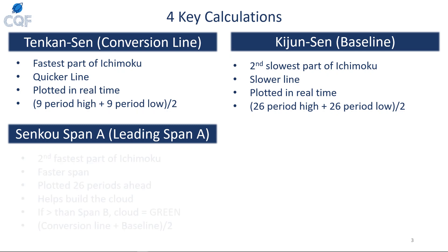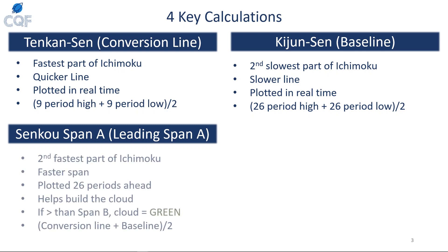Span A is the second fastest part of the Ichimoku and is plotted 26 periods ahead — that's critical to keep in mind. It helps build the cloud, and if span A is greater than span B, the cloud is going to be green. Span A is simply the average of the conversion line and the baseline.